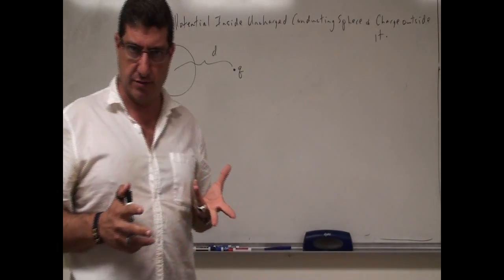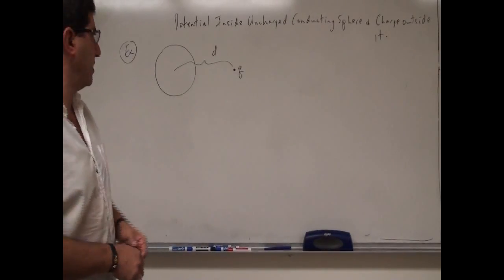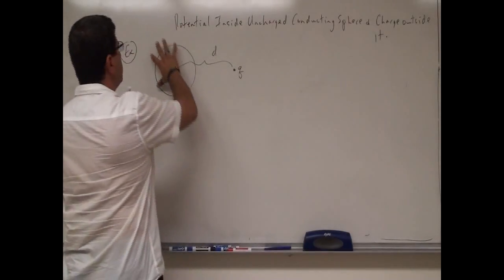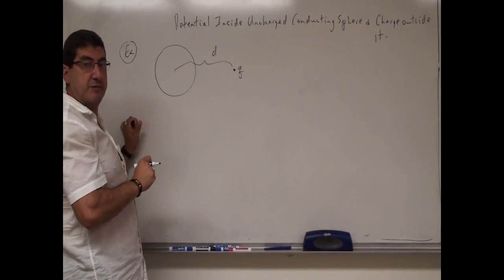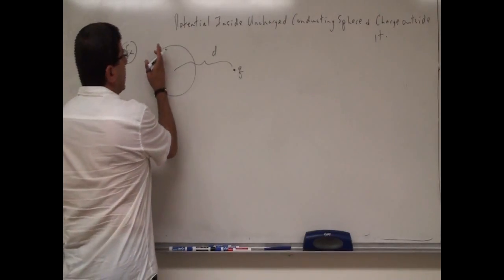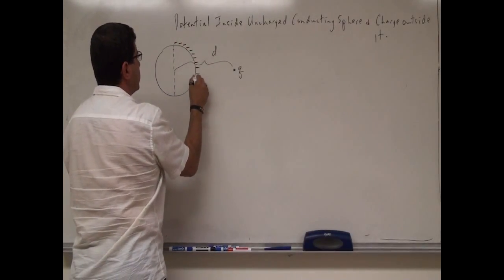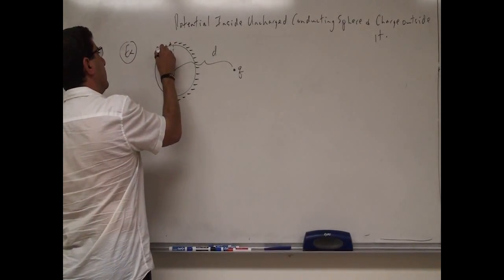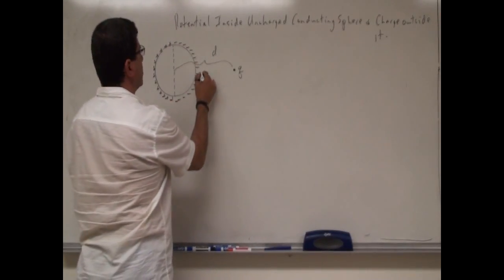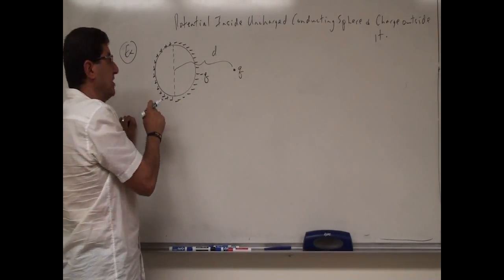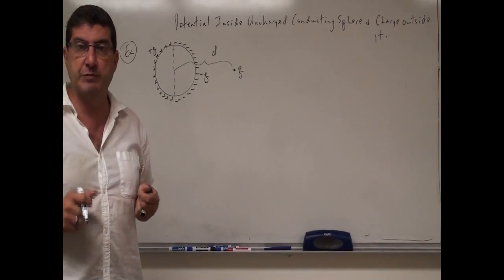What's going to happen in this situation? This is another case where a charge induces a charge on another object, such as a plate or a sphere. This charge Q induces a charge on the sphere. Since the sphere is originally uncharged, its net charge must still be zero at the end. Negative charge flows to the near end of the sphere, so this side becomes negatively charged with charge negative Q, and the other side becomes positively charged with charge positive Q, so the net charge remains zero.